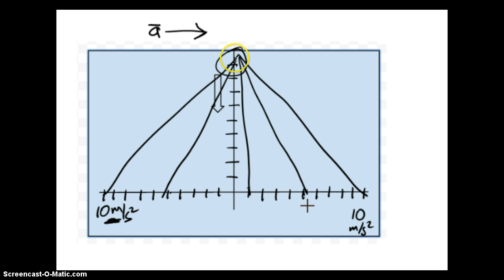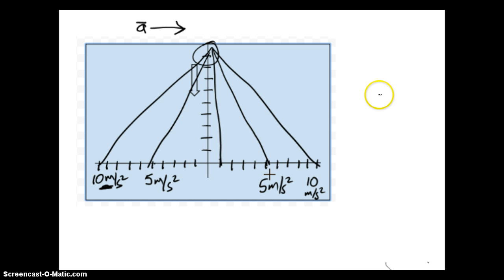And really, the way we can calibrate it, we know that 10 meters per second squared down. And for every even increment to the right or to the left represents one meter per second squared. So let's take this on the road and see what happens.